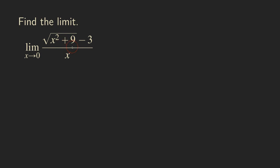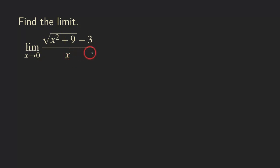If you have seen my other videos, then you know that to deal with radicals, an easy way to do it is to multiply by the conjugate. But we cannot just blindly do that for the problem. We also need to make sure at the beginning that when we substitute zero into the function, it's approaching an indeterminate form of zero over zero. In that case, we can start doing the technique of multiplying by the conjugate. But right now, let's actually try to plug in the zero and check first.